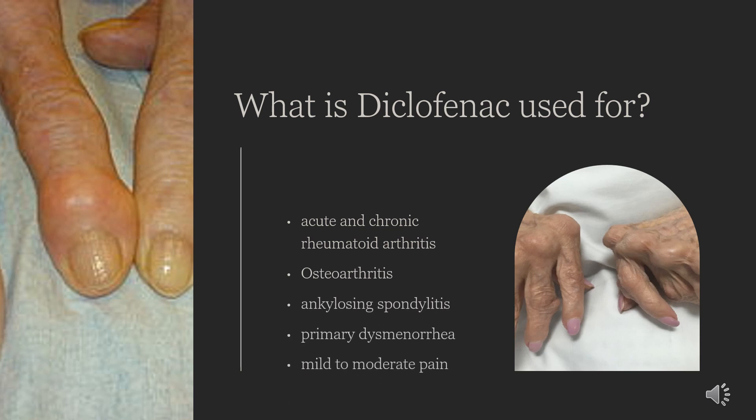What is Diclofenac used for? Diclofenac is indicated for use in the treatment of pain and inflammation from varying sources, including inflammatory conditions such as osteoarthritis, rheumatoid arthritis, and ankylosing spondylitis, as well as injury-related inflammation due to surgery and physical trauma. It is often used in combination with misoprostol as a gastroprotective agent in patients with high risk of developing NSAID-induced ulcers.